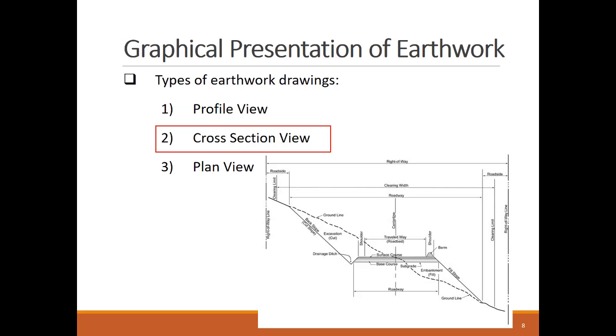The cross section view shows a section of the project. The shown example is for a highway cross section, but it can be for other structures like canals. Similar to the profile view, the cross section shows the existing grade and final grade. Multiple cross section views are provided in the drawings. Each section is made in a segment of the project with similar geometry along its length.